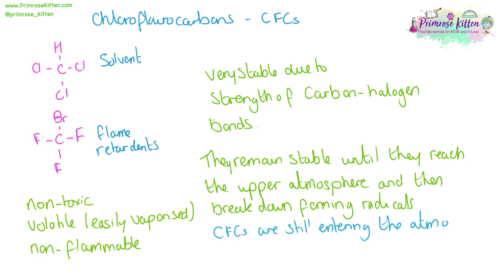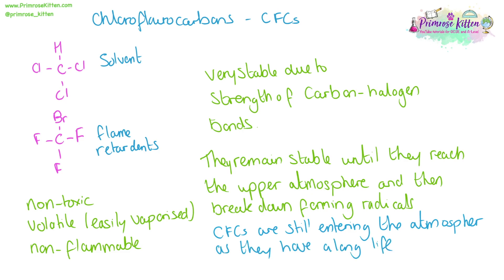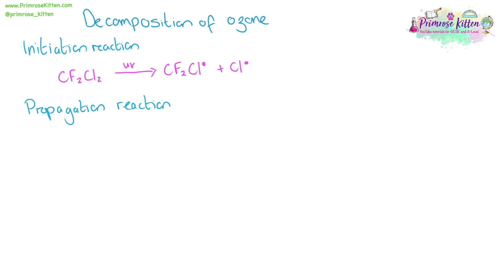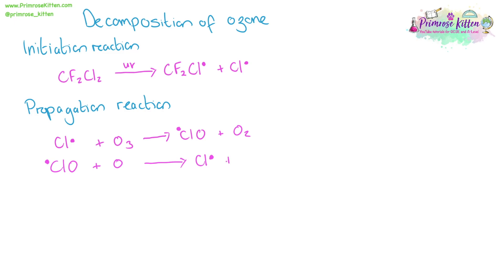CFCs are still entering the atmosphere today, as they have a very long life. CFCs are responsible for the depletion of ozone. The UV in the upper atmosphere will break down the carbon-halogen bond, giving us a halogen radical. These halogen radicals can then react with ozone to produce oxygen. The chlorine radical will react with ozone, and then react with an oxygen atom to give the chlorine radical back again — making it a propagation reaction — and producing O2.